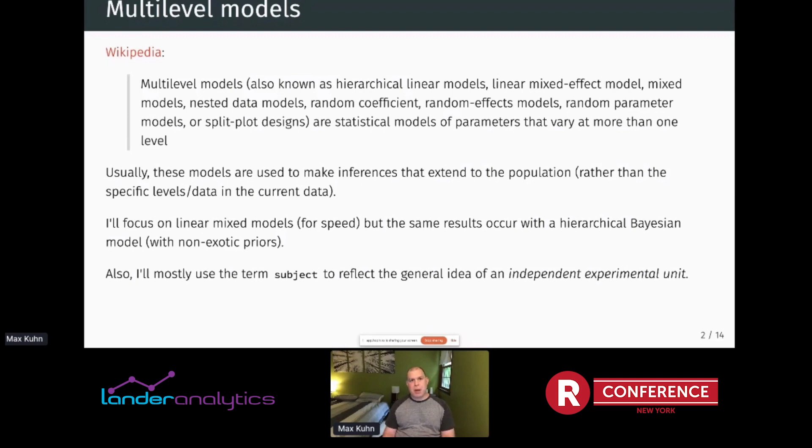Usually these models are used to make inferences that extend to the population, rather than the specific levels or data in the current data set. If you don't use a multilevel model, most of your inferences are confined to the specific subjects that were in your data set. So the nice thing about random effects models and Bayesian models is your inferences can be generalized to a broader set, like the population of those experimental units.